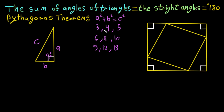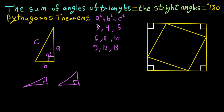Any numbers you can think of that form a right triangle will satisfy this equation. Of course, this is not obvious — it's really hard to imagine that this equation satisfies every right triangle. So now we will prove it visually.